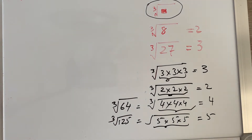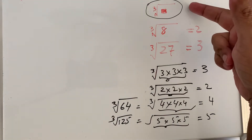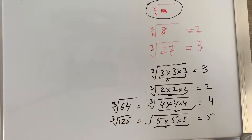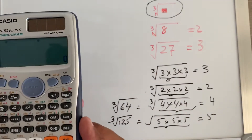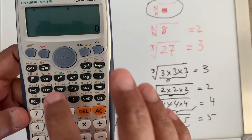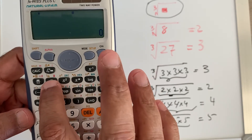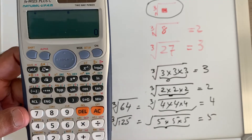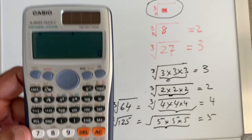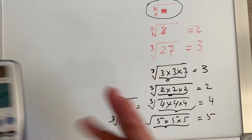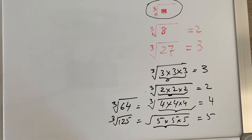Now it's easier because you have the calculator and can directly get the value. The cube root button is located on top of the square root button. You can take the cube root of any number given.